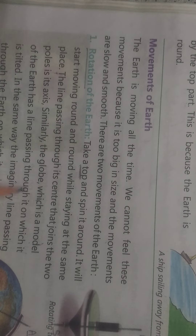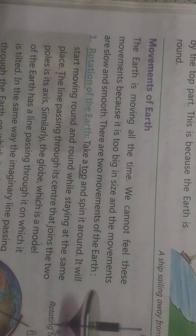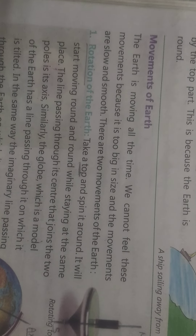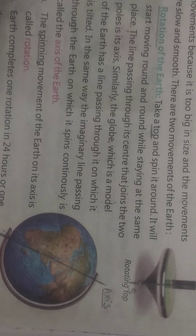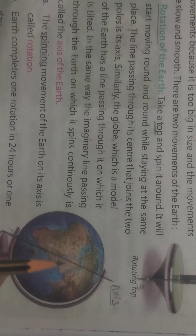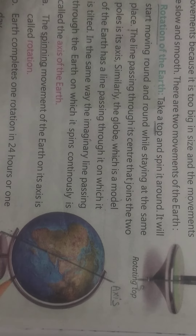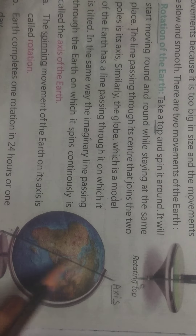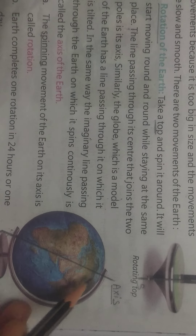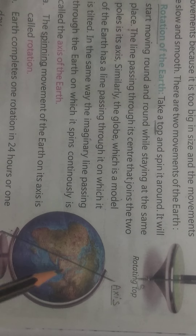We have read and understood about the first movement, rotation. Shiland, can you tell me the definition of rotation? The definition of rotation is: the spinning movement of the earth on its axis is called rotation, and the earth completes one rotation in 24 hours or one day.